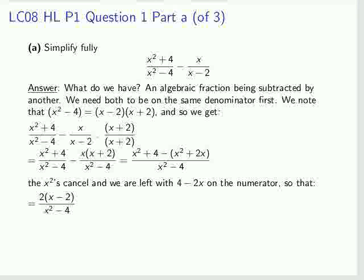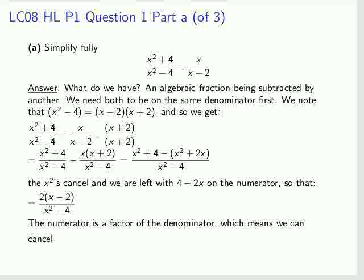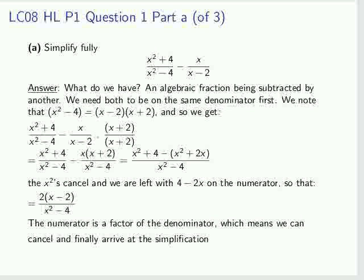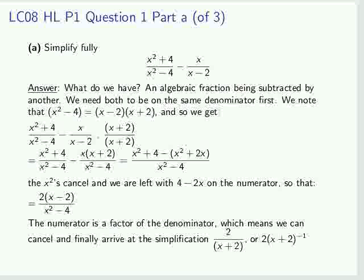We're left with 4 minus 2x on the numerator. Furthermore, we see that the numerator, x minus 2, has a factor of the denominator, so more canceling can take place. We arrive at the simplification of 2 over x plus 2, or 2 times x plus 2 to the minus 1. That is as far as we can go in terms of simplification on Part A. So we move on to Part B.